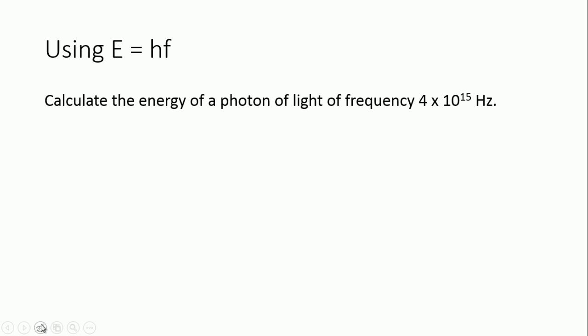So let's have a little go using that. It's a really easy equation to use. So what we're going to do here is we're going to calculate the energy of the photon, where it has a frequency of 4 times 10 to the 15 hertz. So it's quite easy. The energy is equal to Planck's constant, which is 6.63 times 10 to the minus 34. We multiply that by the frequency, which is 4 times 10 to the 15, and if you do that, you get a number 2.7 times 10 to the minus 18 joules.